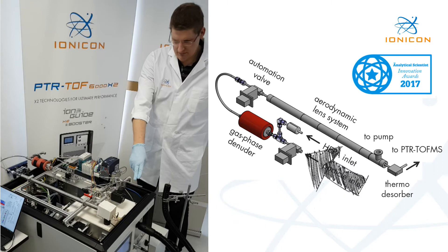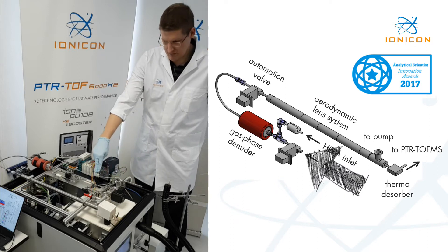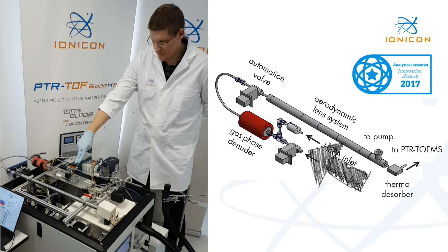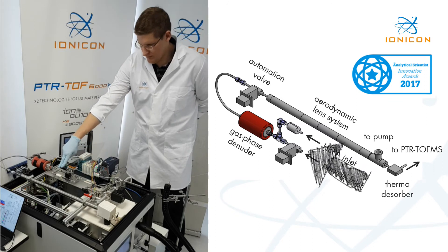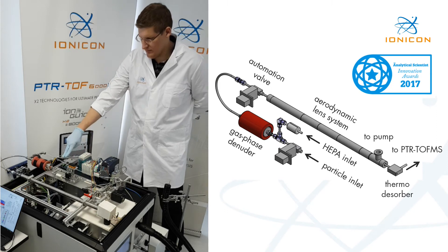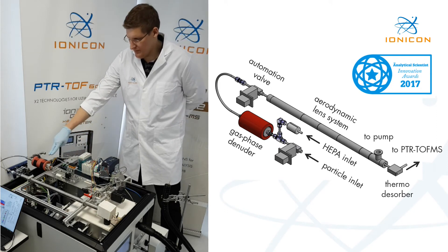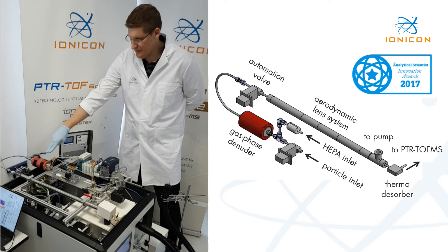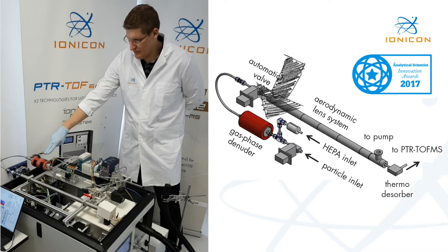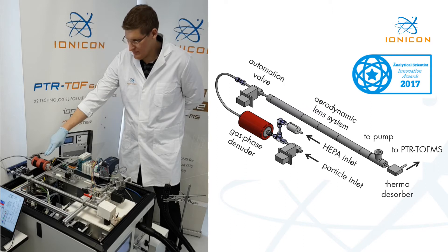Continuously sampled air enters the Caron inlet tubing and reaches the particle steering system that allows for scheduled switching between a direct and a HEPA particle filter inlet. Afterwards, volatile organic compounds plus humidity and ozone are removed by our gas phase denuder. This charcoal denuder is heatable and therefore can be easily regenerated, staying in the system without the need to remove it.